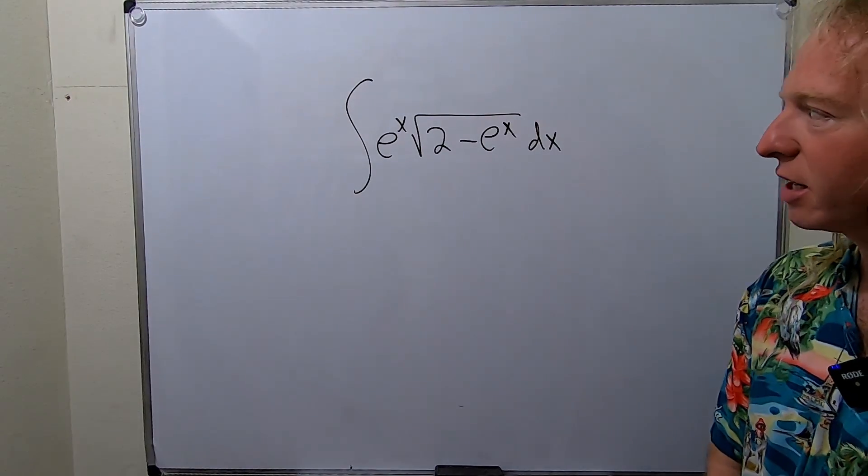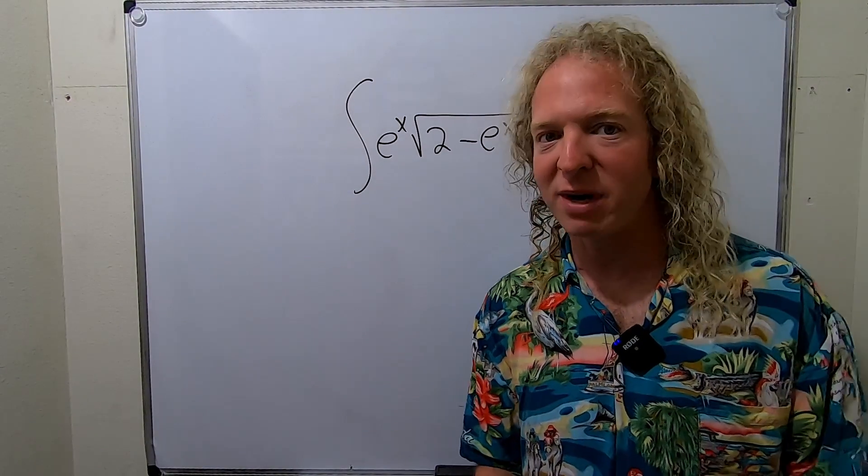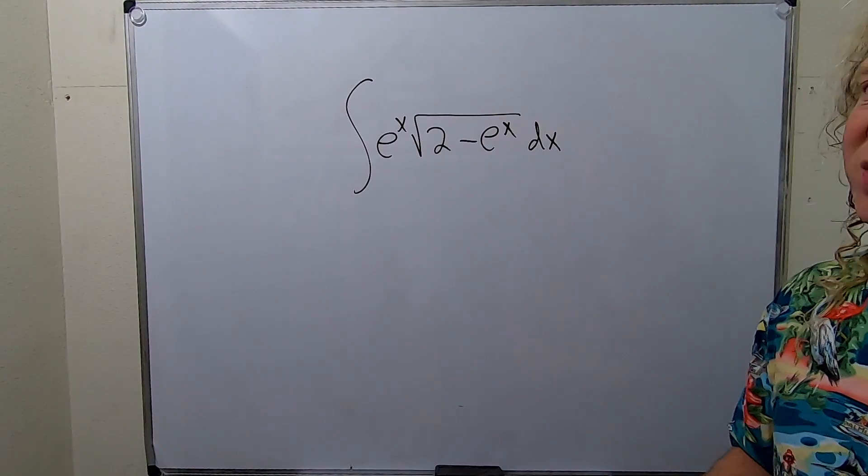In this video we're going to integrate e to the x times the square root of 2 minus e to the x. This problem might look really tough but it's actually not.